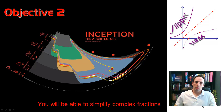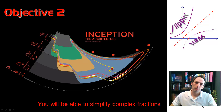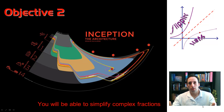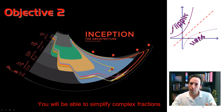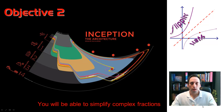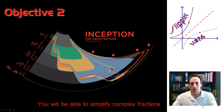Here we are, objective two with complex fractions. You will be able to simplify complex fractions. The picture here is an infographic from the movie Inception — perhaps you're not old enough to see it since it's rated R. A major plot point is dreams within dreams within dreams — different levels of dreams.